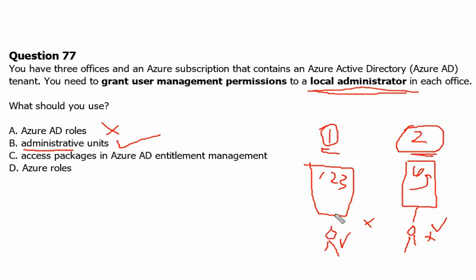We can manage permissions over users and devices within each administrative unit through the designated admin. Administrative units are similar to Active Directory Domain Services organizational units — on-premises we used to have OUs, and this is the equivalent concept in Azure. To use administrative units, a P1 (Premium 1) license is required for the admin only; unit members are free.